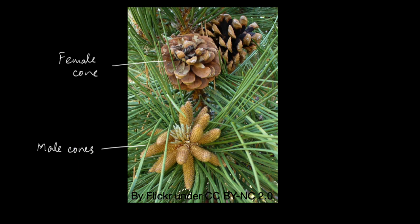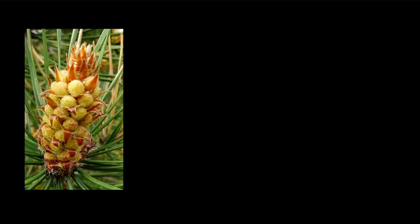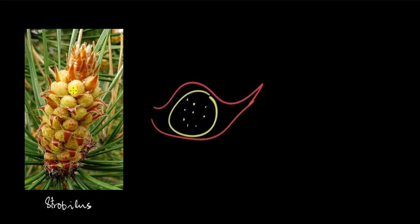In this video we are going to look at the structure of the male cone. A cone is also called strobilus, and the plural is strobili. A strobulus or cone is made up of these smaller structures. Let's take a look at them in more detail.